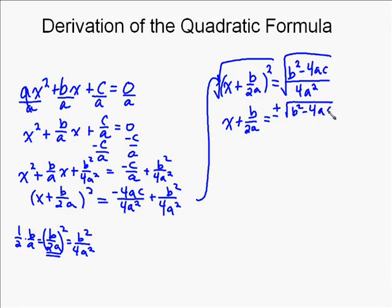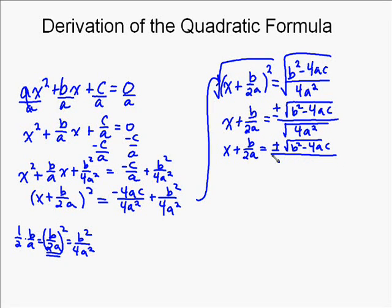And then I'm going to use the division property of square roots, which allows me to break it into a fraction of square roots. So b squared minus 4ac on top is in the square root, and then 4a squared is on the bottom in a square root. Well, the good thing is we know what the square root of 4a squared is. The square root of 4a squared is 2a.